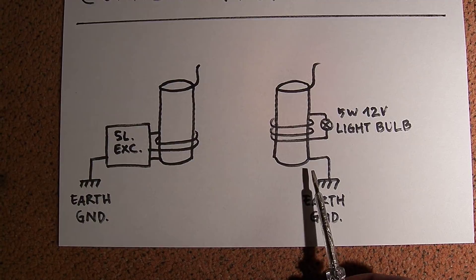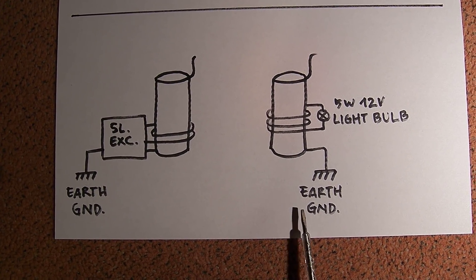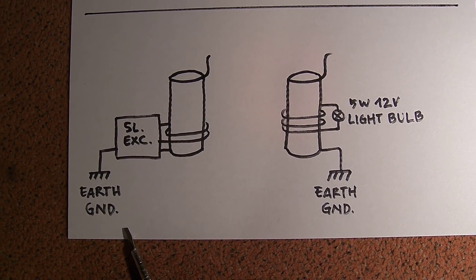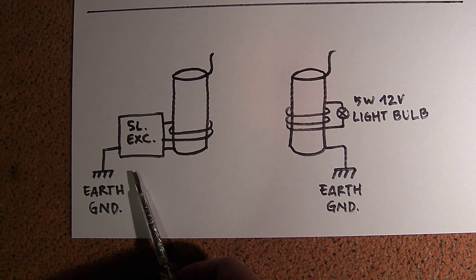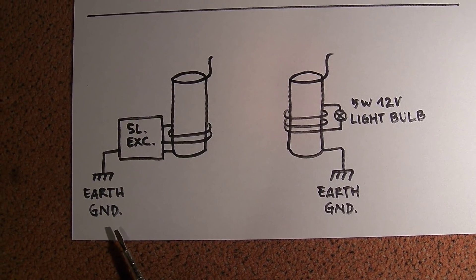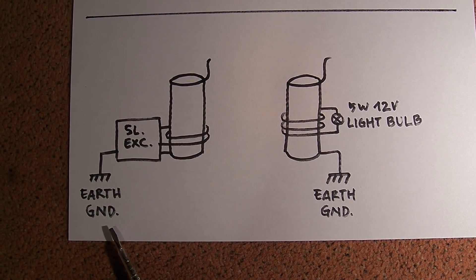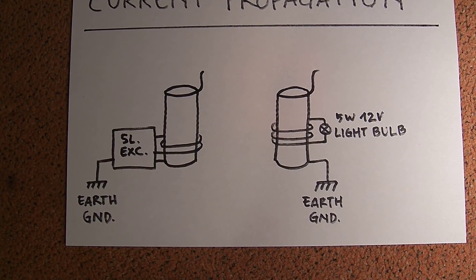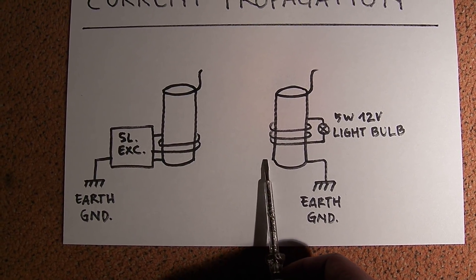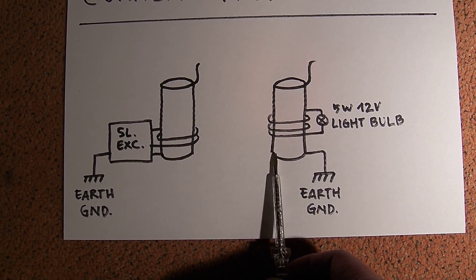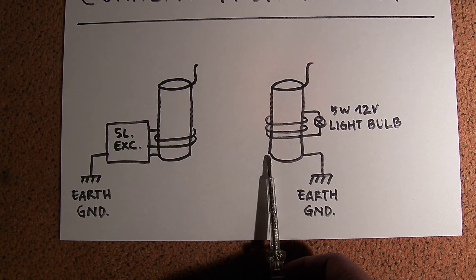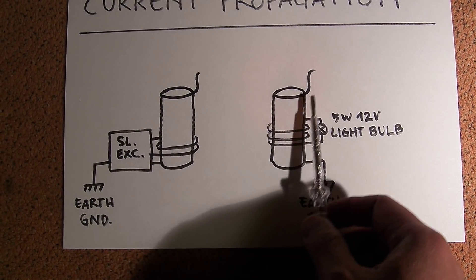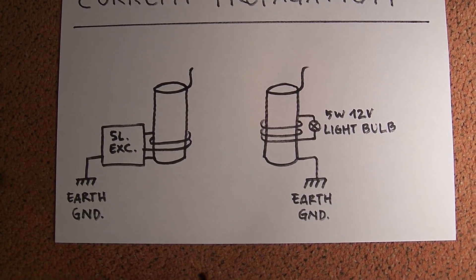At the bottom of the receiver coil is connected to the earth ground, and the Slayer exciter circuit is powered by a power supply which also has an earth ground connection. From my observation, we have at the bottom of the receiver coil the current, and around the top of the receiver coil or Tesla coil we have voltage.